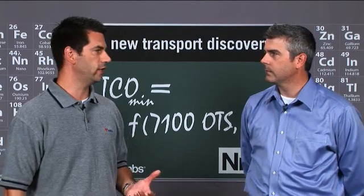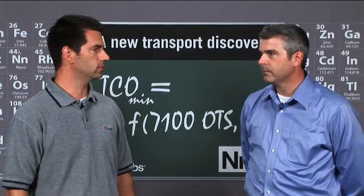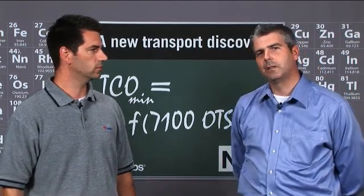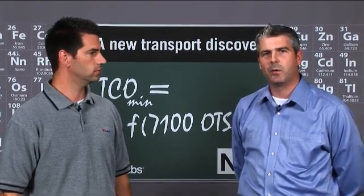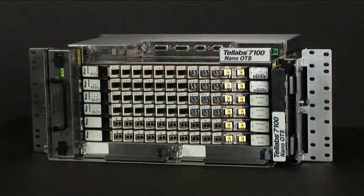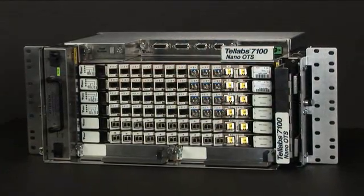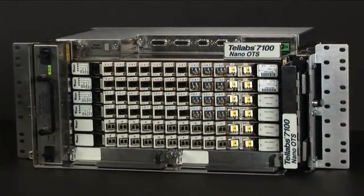How does the Telab 7100 Nano Optical Transport System address these needs and what benefits does it provide to the network? One of the big accomplishments here at Telabs is we've taken all the features of the current 7100 multi-degree ROADM and transferred all those features into the 7100 Nano at about a third the size, and it consumes a lot less power. At the same time, we use all the same service delivery modules available today — the ADM on a blade, which is basically a multi-service provisioning platform card that you can provision any service on any port at any given time, all done through software.